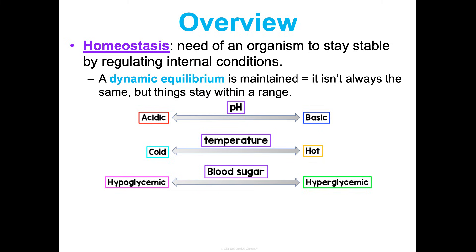There are a ton of things that are regulated: pH, for instance — how acidic or how basic the environment is, and there are different pHs for different areas. Temperature, whether things need to be cold or hot. Blood sugar — hypoglycemic versus hyperglycemic. So we're trying to maintain ranges here.